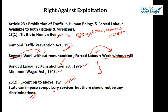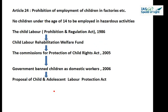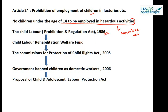Article 24 deals with the prohibition of employment of children in factories. It says no child below the age of 14 years shall be employed to work in any factory or mine or engaged in any other hazardous employment. While this prohibits employment in hazardous activities, it is inferred that children may be employed in harmless activities. The legislations passed include the Child Labour Prohibition and Regulation Act, 1986, and the Commission for Protection of Child Rights Act, 2005.